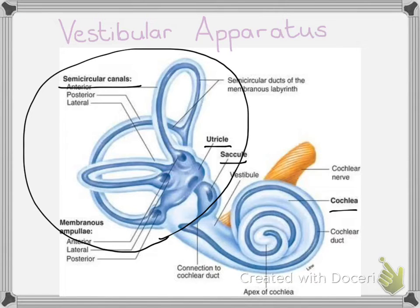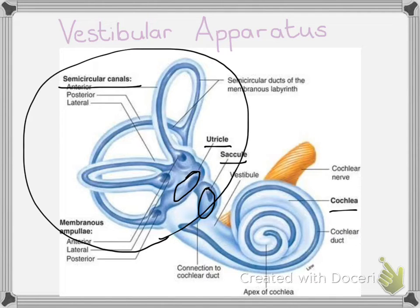We're going to start looking at two structures found in the vestibular apparatus called the utricle and saccule. They are these two swollen structures lower down on the vestibular apparatus. They are structured very similarly to the cochlea, in that they also have a bony labyrinth on the outside, a membranous labyrinth on the inside, and they're filled with fluid.